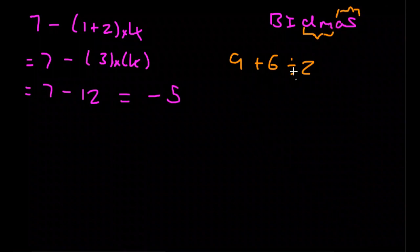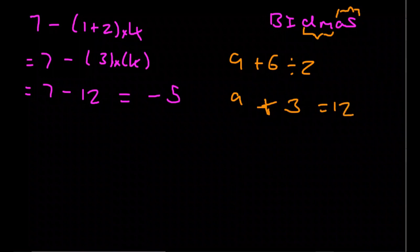And so we do the division first here. Okay, so we have 9 plus, well 6 divided by 2 is equal to 3. And adding those together we get 12. Nice and easy.